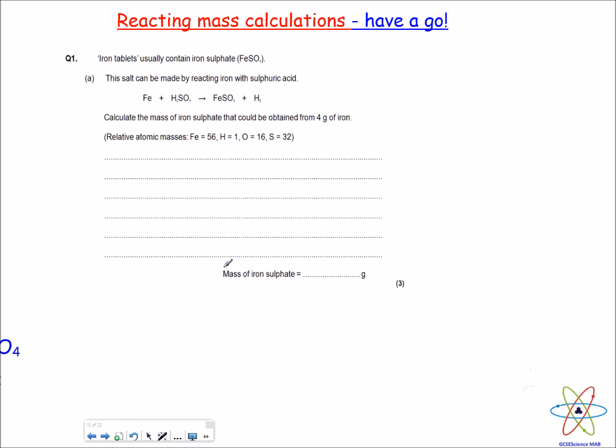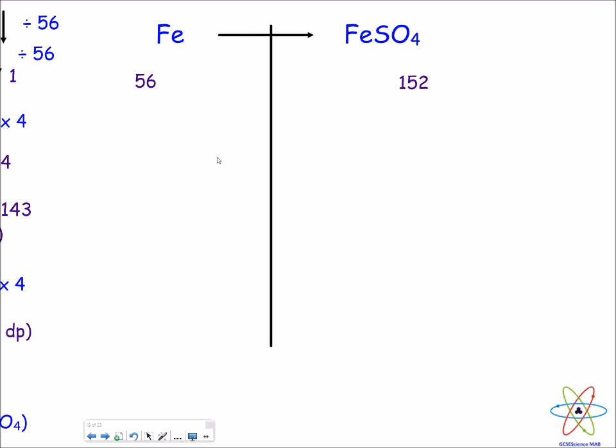Here's another exam question. Please pause the video and have a go yourself, and then I'll go through the answer. Okay, the first thing you'll notice is the question is only referring to iron and iron sulfate, so we can ignore H2SO4 and H2. We need to write out our two substances of interest, and I've also written down the masses below—56 for iron and the formula mass for iron sulfate is 152. That tells us that 56 grams of iron produces 152 grams of iron sulfate. To make it easier, I need to convert this 56 grams of iron into 1 gram. To do that, divide 56 by 56, that gives me 1.